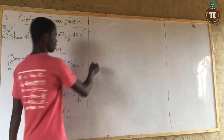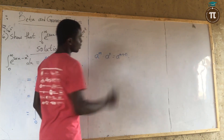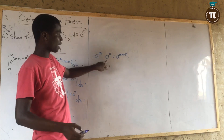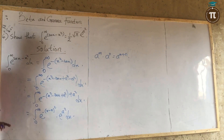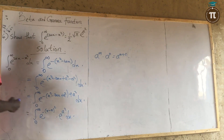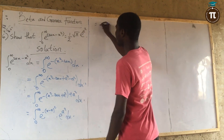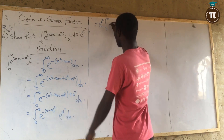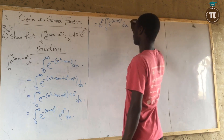Recall that a raised to power m multiplied by a raised to power n gives a raised to power (m plus n), so we can separate the exponential. Since e raised to power a squared is a constant with no x, we bring it outside: the expression becomes e raised to power a squared, multiplied by the integral from 0 to infinity of e raised to power minus (x minus a) all squared dx.